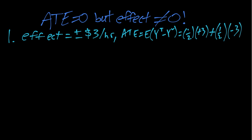So if we plug those into the expected value formula we can see that positive 3 and negative 3 will just cancel out. So our average treatment effect is zero.